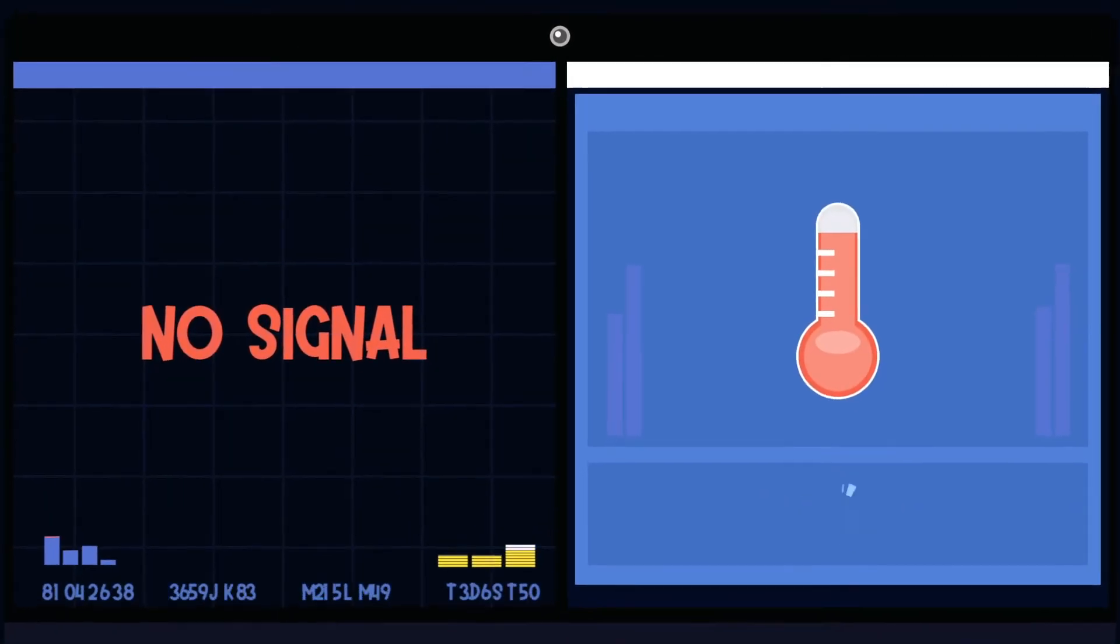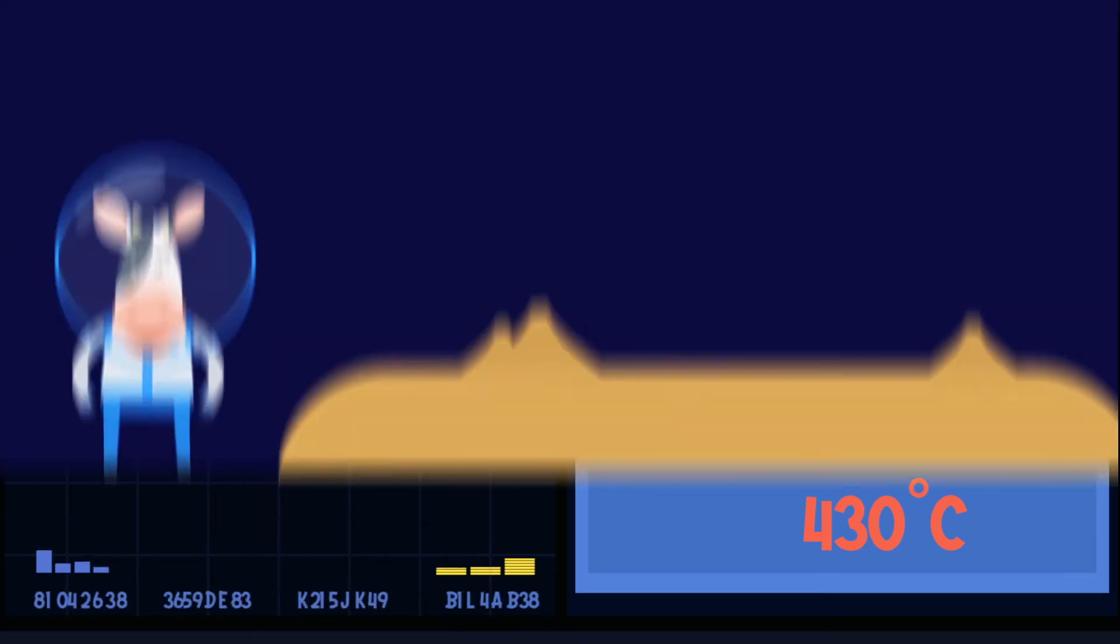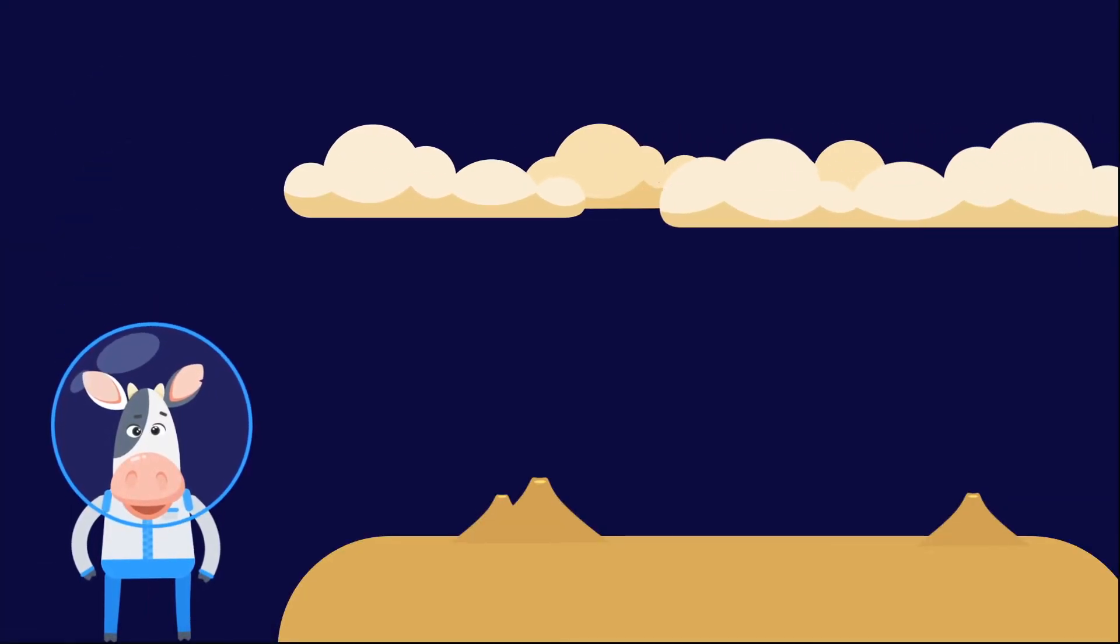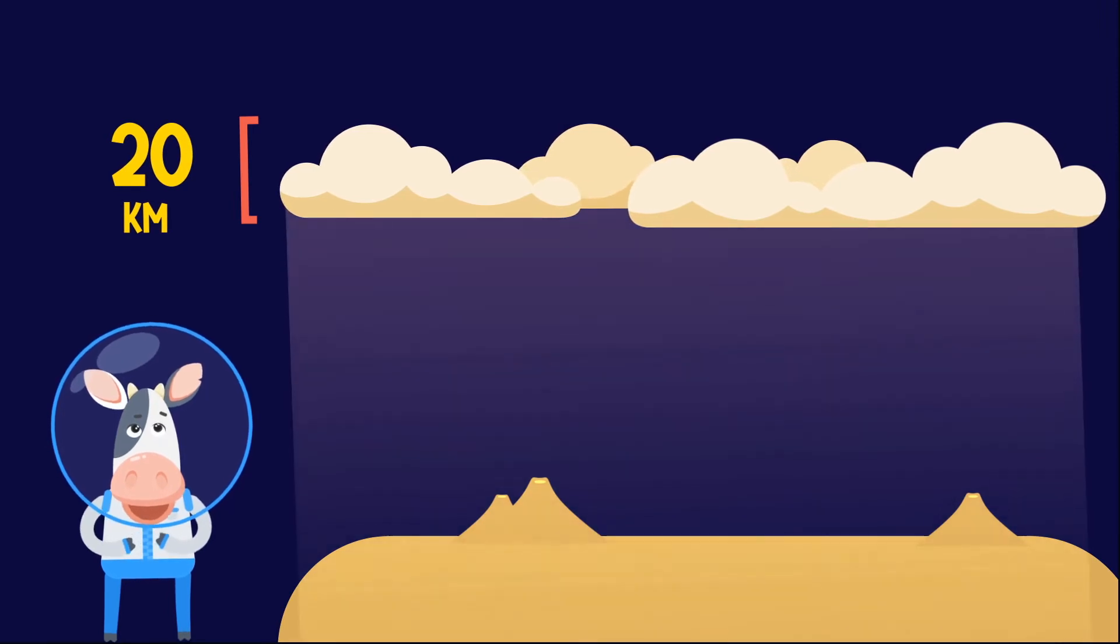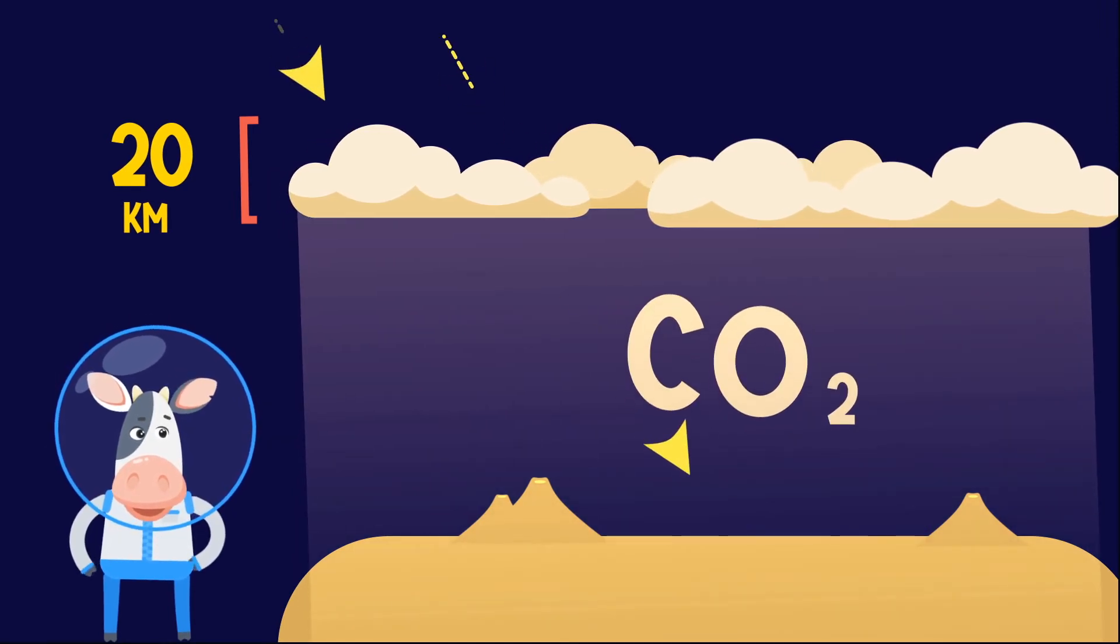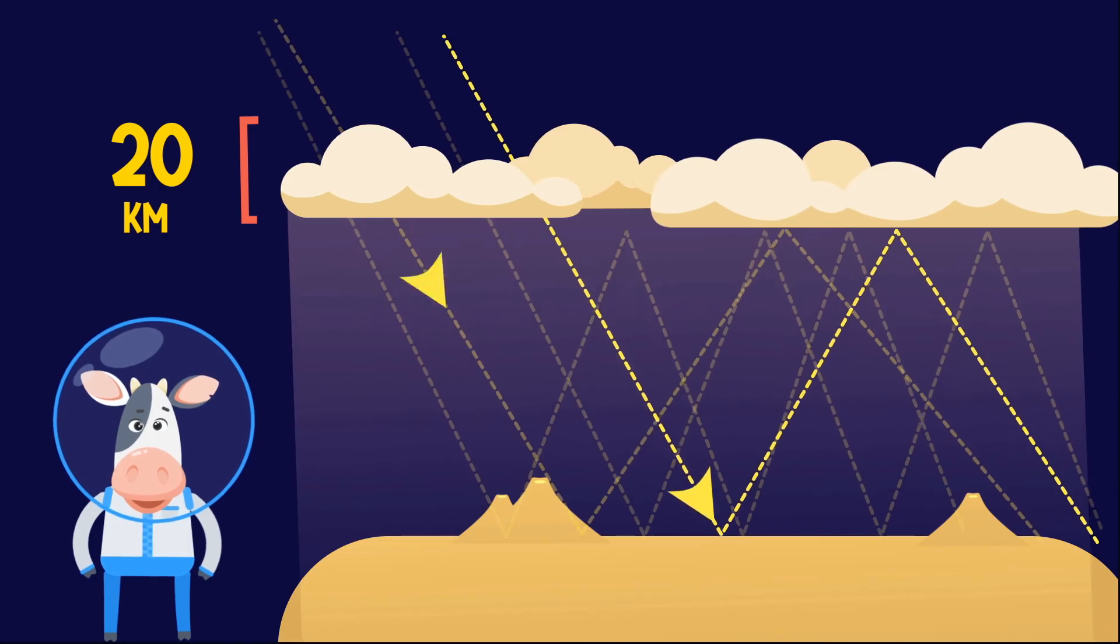Also, Venus is the hottest planet in the solar system because a thick 20-kilometer layer of clouds of sulfuric acid and a dense atmosphere of carbon dioxide keep in the Sun's rays, creating a greenhouse effect.